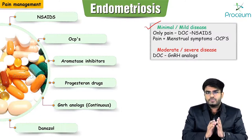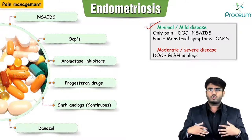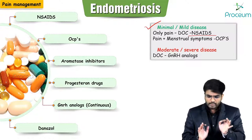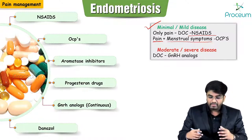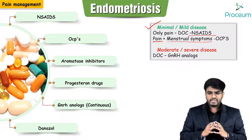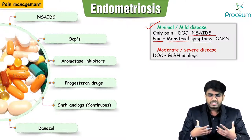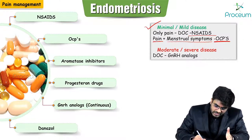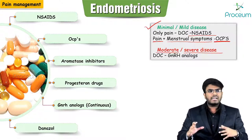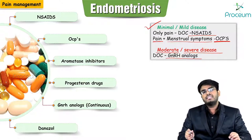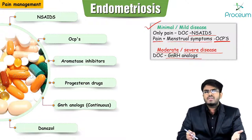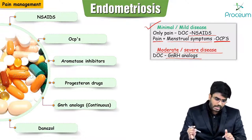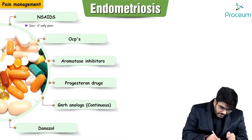Drug selection based on severity: if there is only pain — NSAIDs are the drug of choice. If pain is accompanied by menstrual symptoms such as dysmenorrhea, dyspareunia, or infertility — OCPs are the drug of choice. For severe disease with uncontrollable pain — go directly to GnRH analogs.